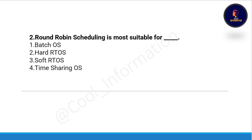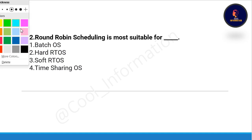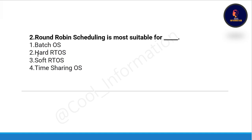The next question is: round robin scheduling is more suitable for which operating system? The options are: batch operating system, hard real-time operating system, soft real-time operating system, or time sharing operating system. The correct option is option number four, time sharing operating system.